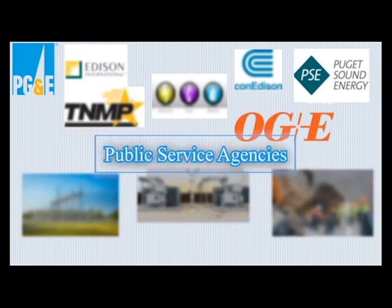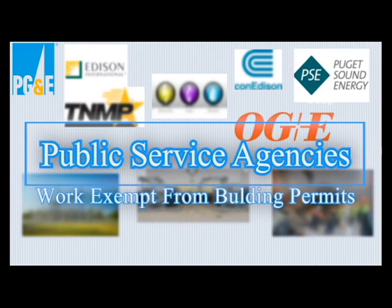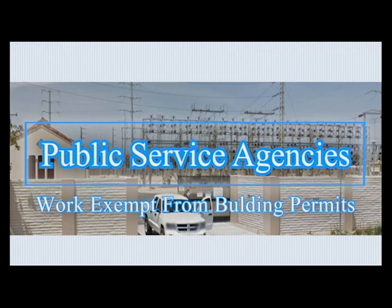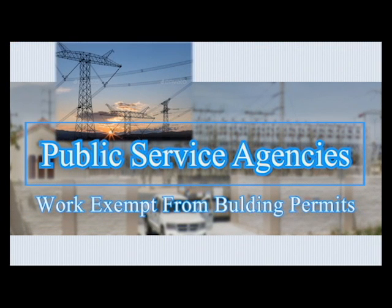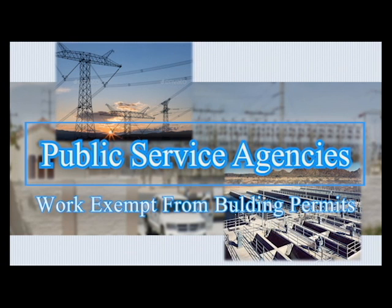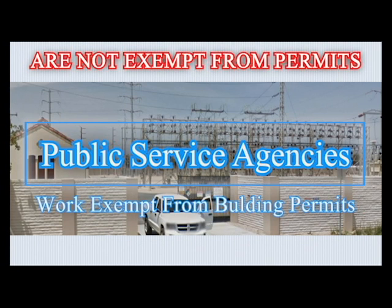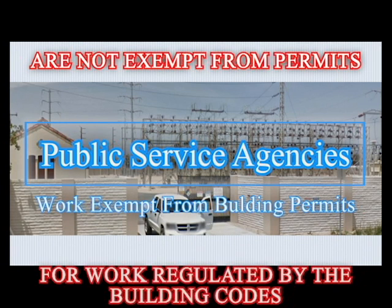Under work exempt from building permits are public agencies such as local utility companies. Such agencies are exempt for work to their generation, transmission, distribution, and metering equipment. However, those agencies are not exempt from building permits for work that is regulated by the building codes.